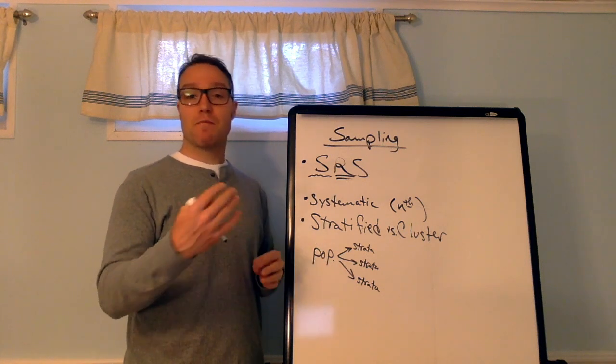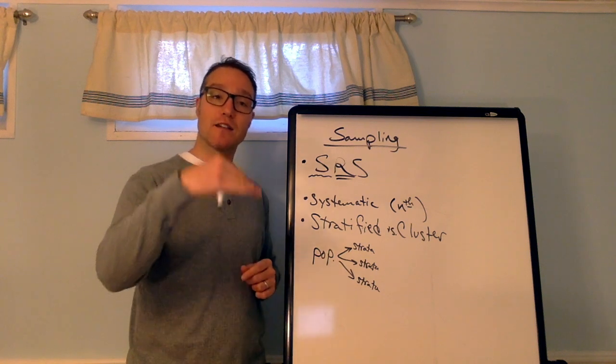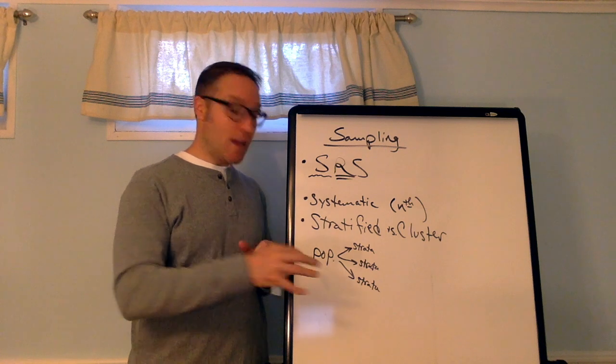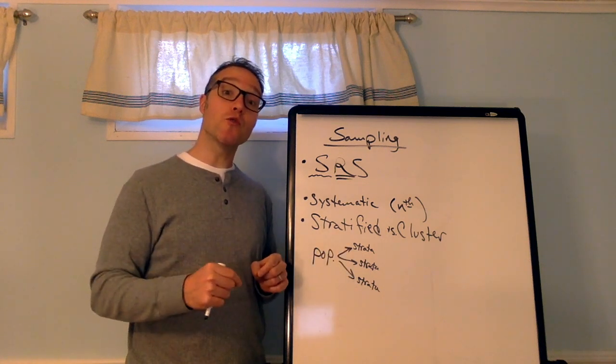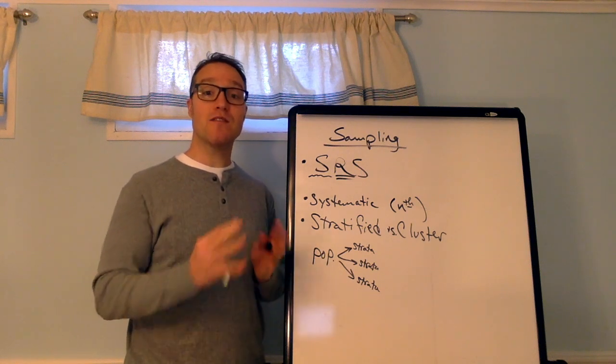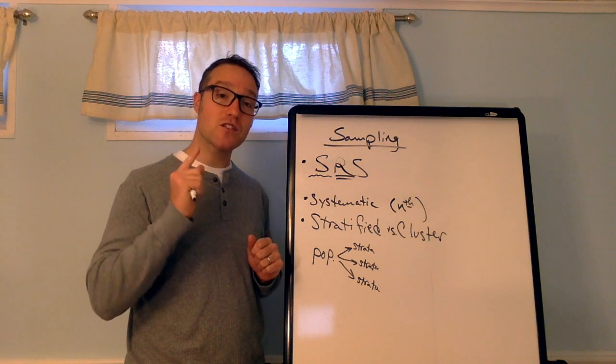So I divide the population based on something that's relevant into groups of similar individuals. These are called strata. Then I choose a separate simple random sample in each stratum and combine these SRSs to form the sample. That's stratified.